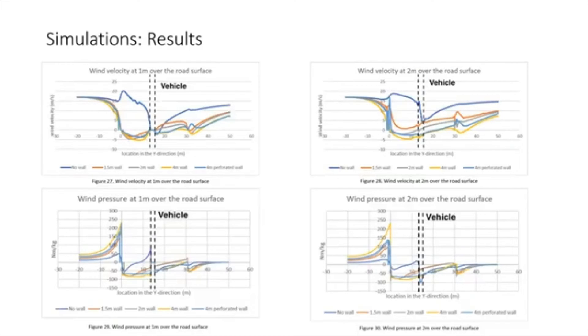Figures 27 to 30 show the wind velocity and wind pressure at the two sampling lines of five simulations with different windshields. The positions of vehicle models are indicated in these figures. As the wall gets higher, the wind velocity at the location around the vehicle tends to get lower. When the height of the wall continues to increase, the absolute value of the negative wind velocity becomes higher. It can be found that the perforated walls have a lower absolute value of the wind velocity than that of the non-perforated wall of the same height. According to Figures 29 and 30, the model with a 4 meter perforated wall generally has a lower absolute value of the wind pressure than the 4 meter non-perforated wall.